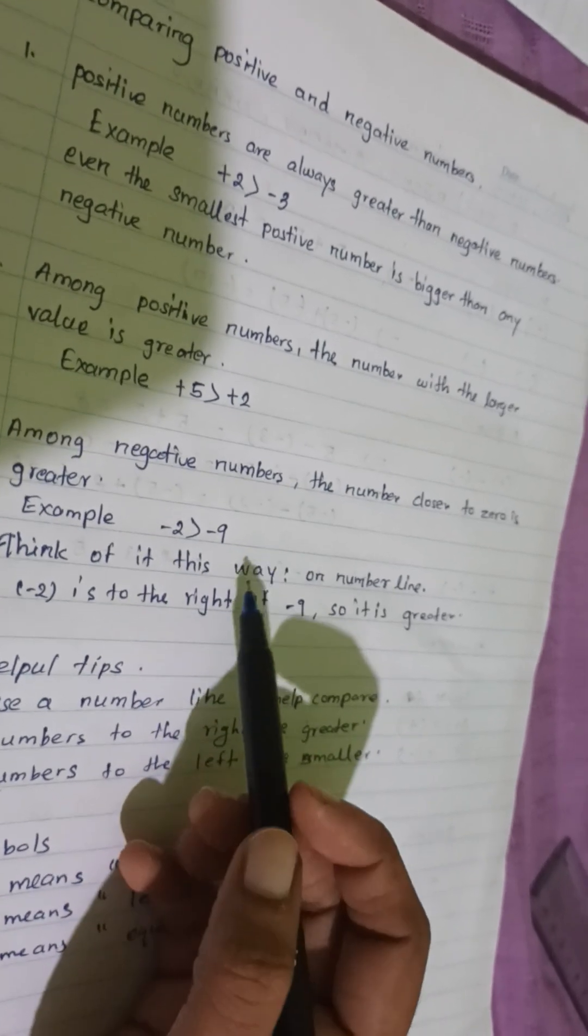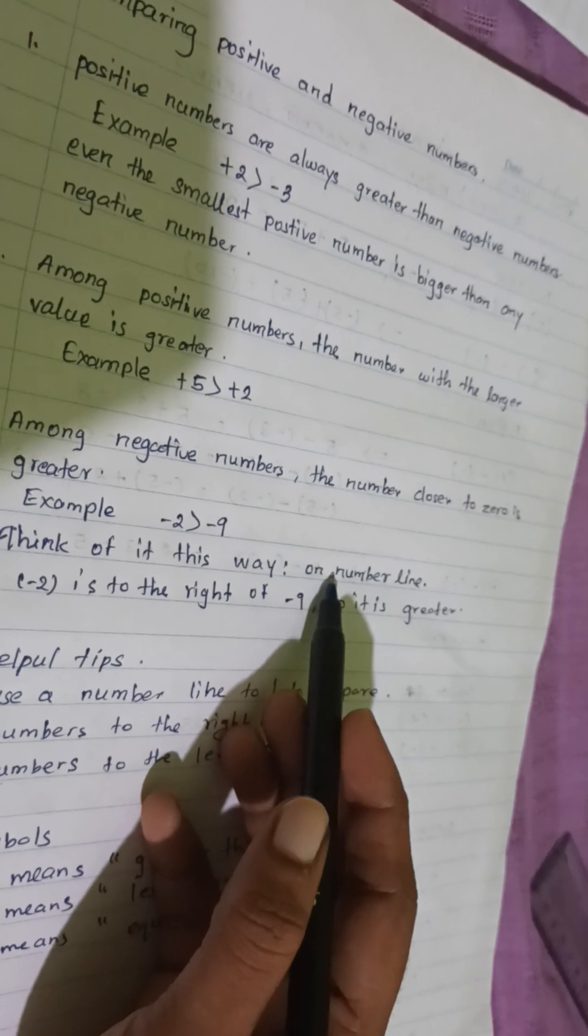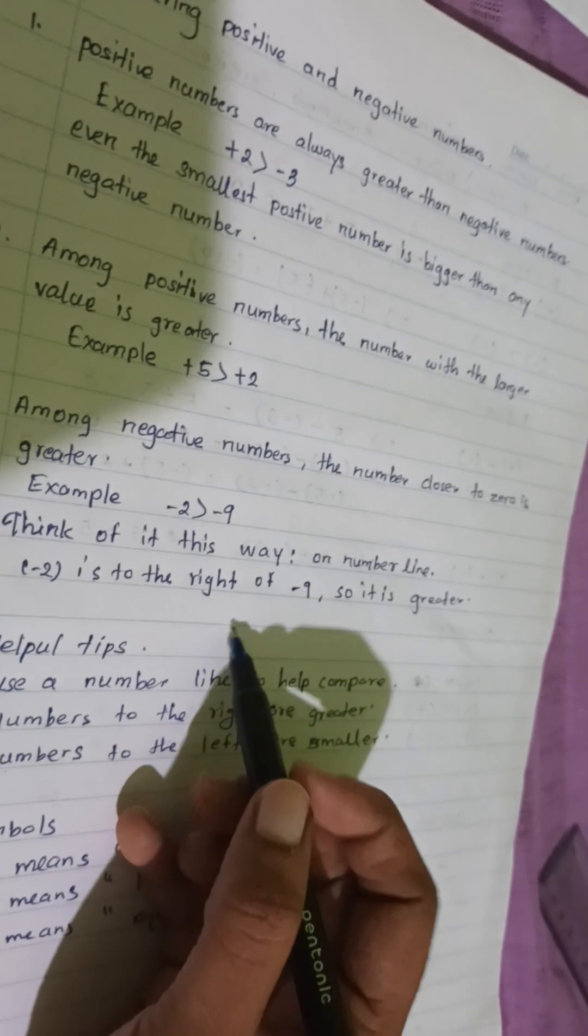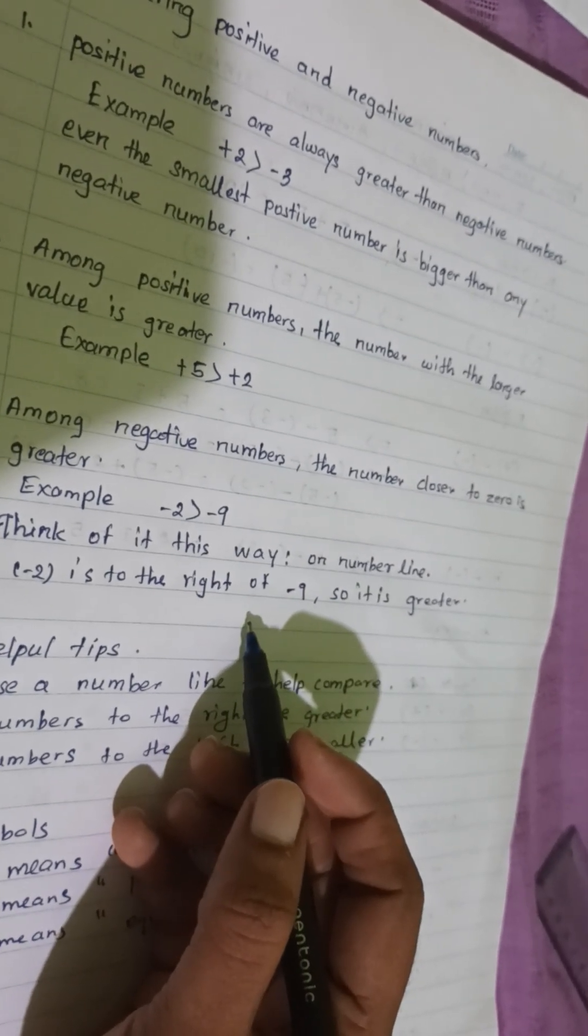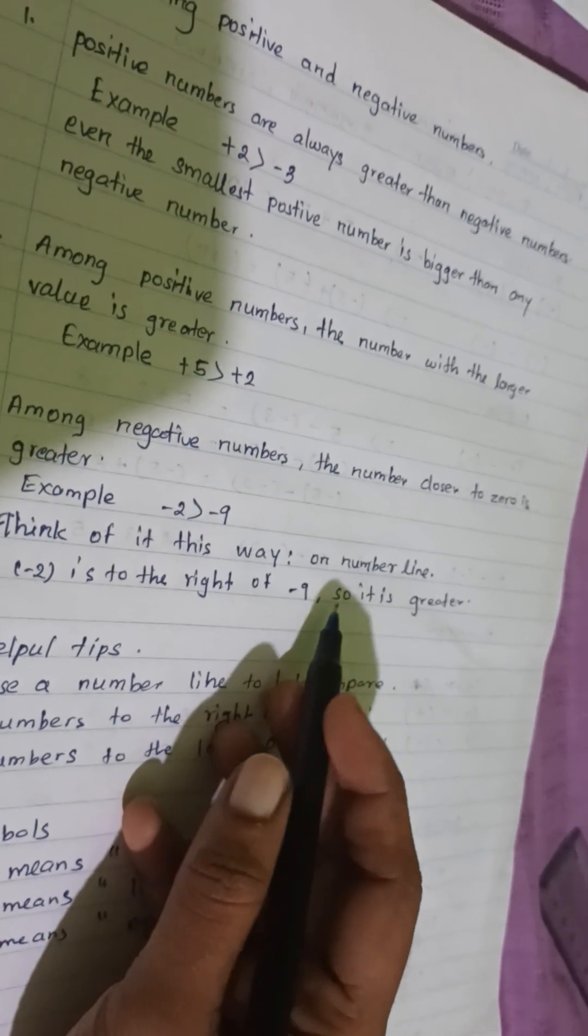Think of it this way: on a number line, minus 2 is to the right of minus 9. So, it is greater.